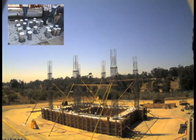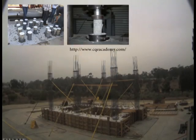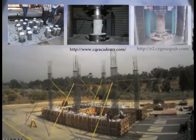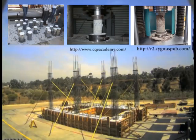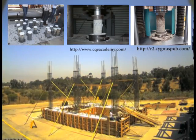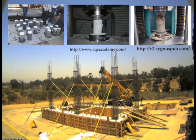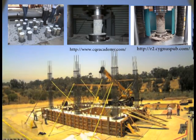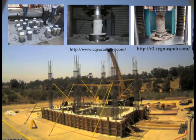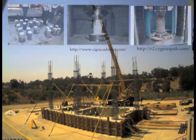During the pouring process, samples of the concrete are poured into small cylinders, which are prepared for testing at various stages of the curing process to assess the concrete's strength. After 28 days of curing, the concrete should reach around 90% of its design strength.